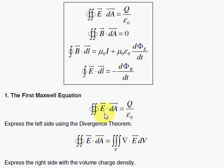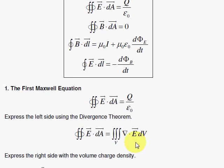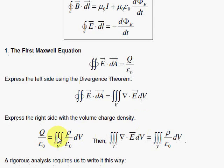The divergence theorem takes an enclosed surface integral where the E field pierces outward through the volume — it's a surface integral that encloses a volume. By this divergence theorem, we replace the aerial integral with the divergence of the electric field and integrate over the enclosed volume. On the right side, we integrate the charge density over that volume region, which gives us the total charge Q inside that Gaussian surface.